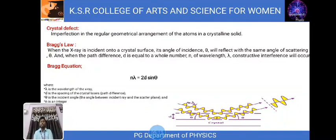Here you can see Bragg's equation: n lambda equals 2d sine theta. Lambda refers to the wavelength of X-rays, d refers to the spacing of crystal lattices, theta refers to the incident angle, and n is an integer.